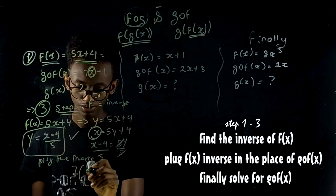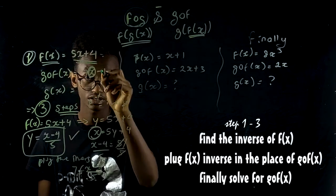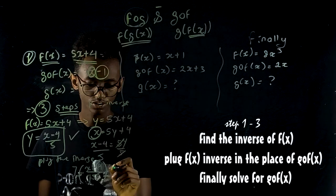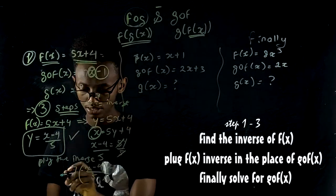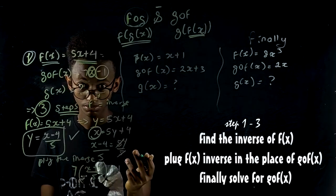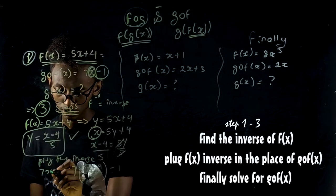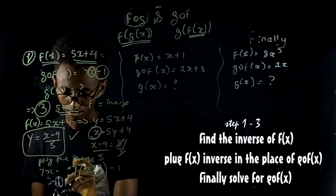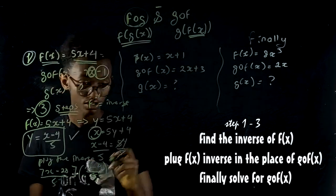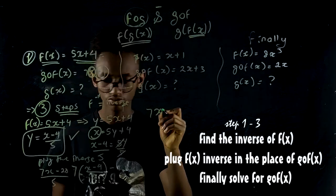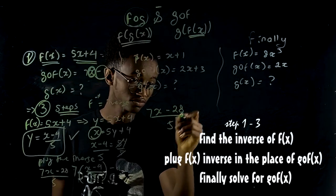7, inverse: x minus 4 over 5. Then minus 1. 7x. Two steps. The equation gives 7x minus 28 over 5.